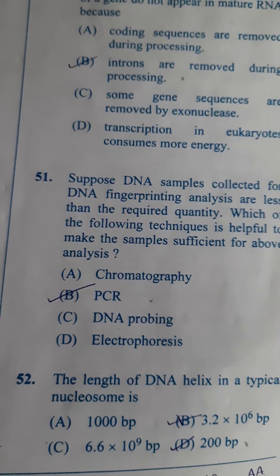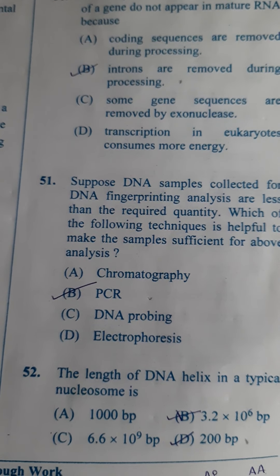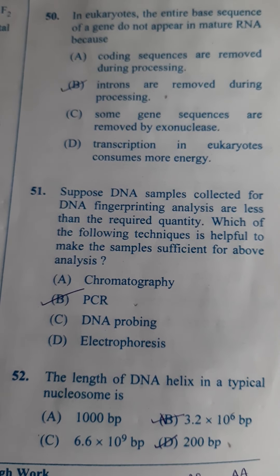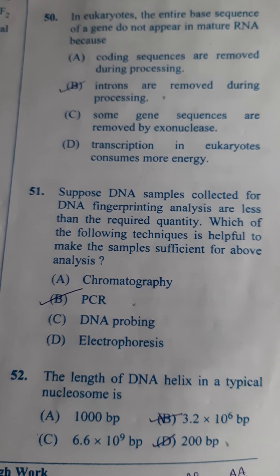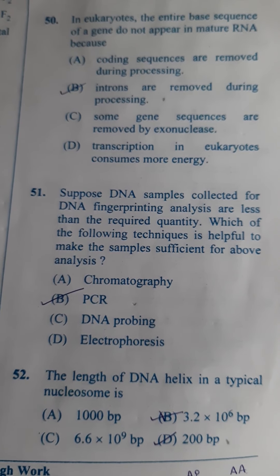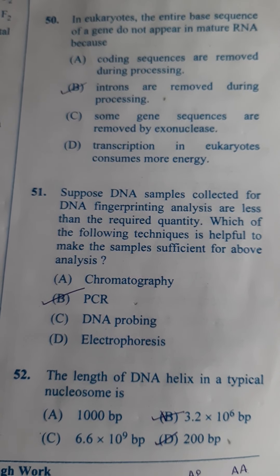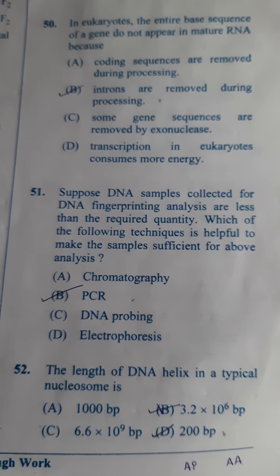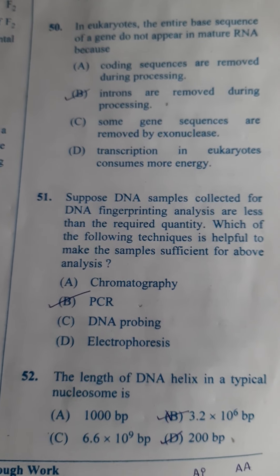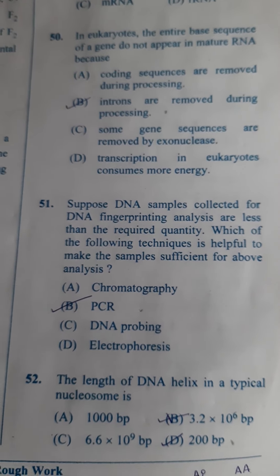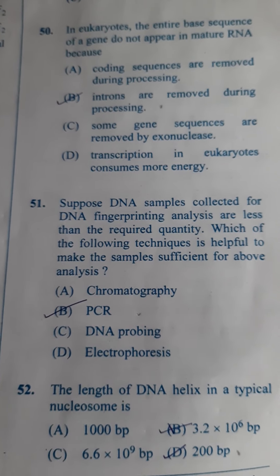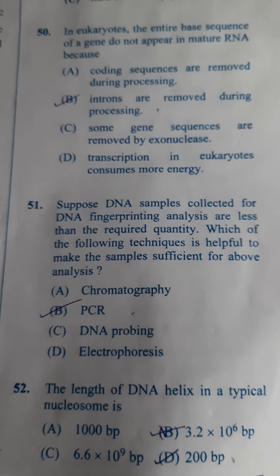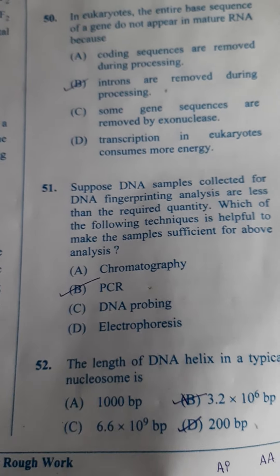Next one: The length of the DNA helix in a typical nucleosome is? It's a straight question from the concept of packaging of DNA. A typical nucleosome will have an average of 200 base pairs. So the answer here is D — every nucleosome will have 200 base pairs.